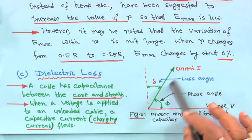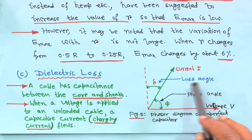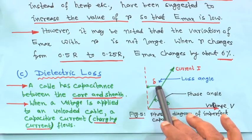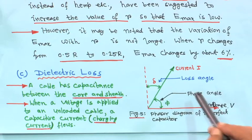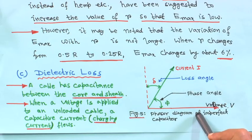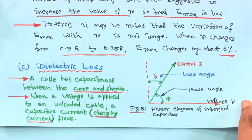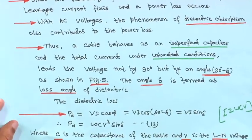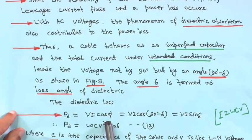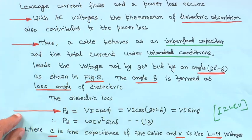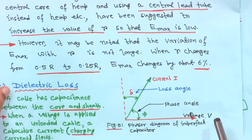We have just seen dielectric loss in a cable. This is the current, this is the voltage, and this angle is called the loss angle, while this is the phase angle between current and voltage. The dielectric loss in a cable is V·i·cos φ, where φ equals 90 degrees minus delta.